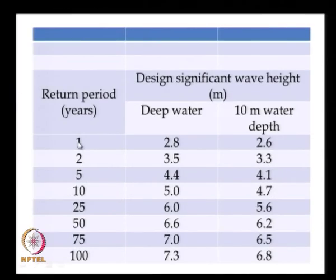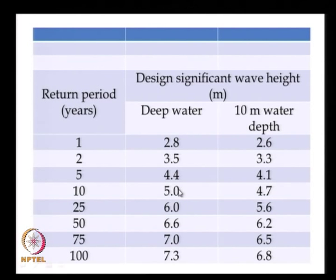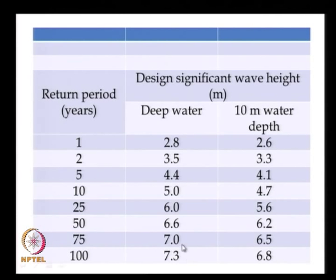For a 1-year return period, deep water significant wave height is 2.8 meters and at 10-meter depth it is 2.6 meters. For a 10-year return period, deep water is 5 meters and at 10-meter depth it is 4.7 meters. For a 100-year return period — which is typically used — deep water is 1.3 meters and at 10-meter depth it is 6.8 meters, and we take this 6.8-meter value.